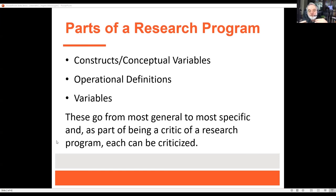These three things — constructs, operational definitions, and variables — go from the most general parts of a theory to the most specific part. As such, it's your job in research methods to be a critic of a research program. Each of these three things can get criticized.